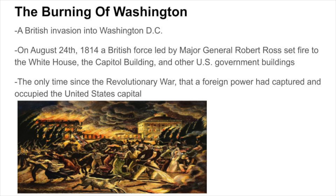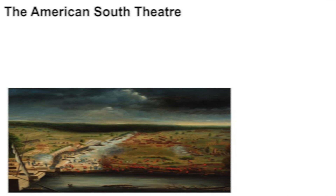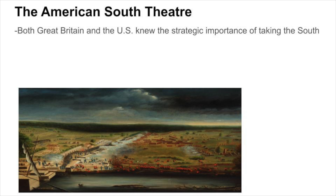Less than a day after the attack, thunderstorms came through the city, putting out all of the fires. This caused the British to retreat from the city and move back towards their ships. The American South Theater was the final area where much of the fighting took place. Both Great Britain and the U.S. knew the strategic importance of taking the South, which was why in the latter years of the war, much of the fighting congregated in that area.